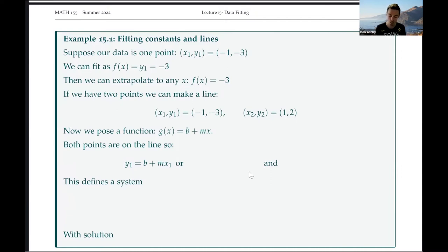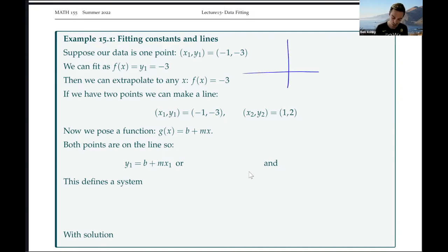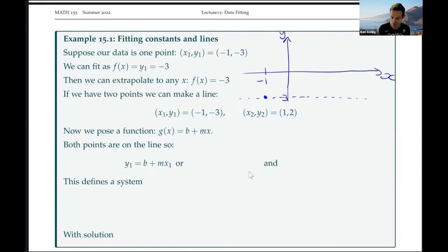Suppose for example we just have one data point: x1, y1 equals minus 1, minus 3. All that means is that we can just fit a horizontal line to our data. We only have one data point, so all we can extrapolate is that for any x value we put in, we get minus 3 out. This is obviously a very simplified case and doesn't really tell you anything — but given just one data point, that's all we can do.